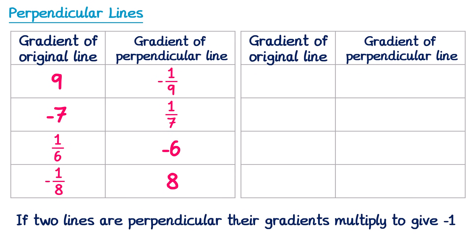What if the gradient of the original line was a fraction like 2 thirds? To find the reciprocal of something like this, you can just imagine swapping the 2 and 3 around. So the reciprocal of 2 over 3 is 3 over 2. And of course that's positive, so we need a negative — so the gradient of the perpendicular line would be negative 3 over 2. And if the gradient of the original line was negative 5 over 3, we do the reciprocal which is 3 over 5, and since this one's negative, the perpendicular one will be positive — so just 3 over 5.